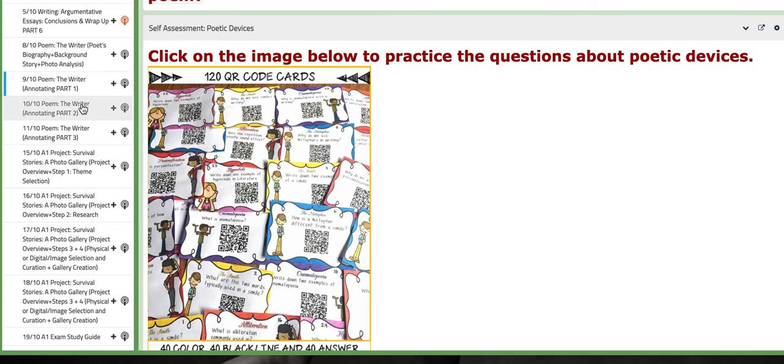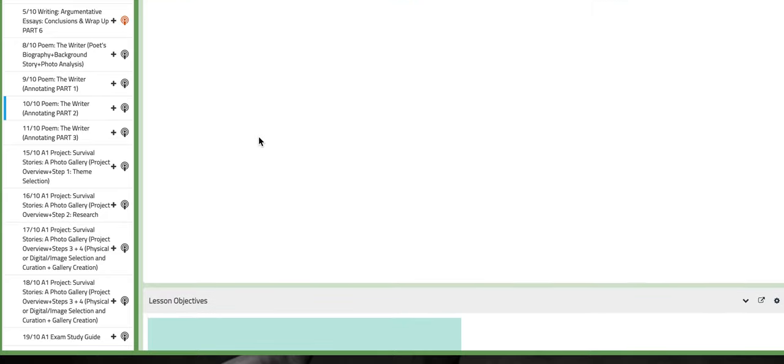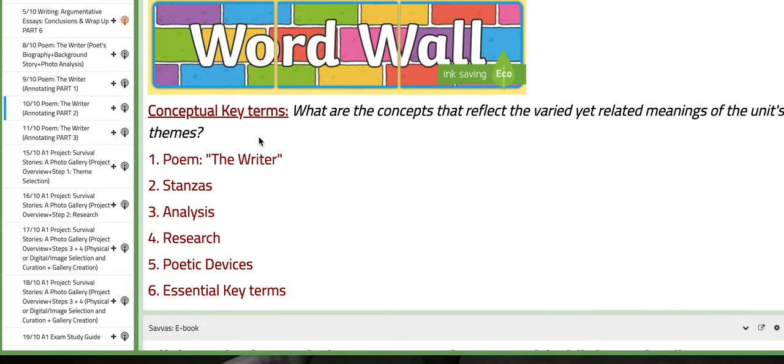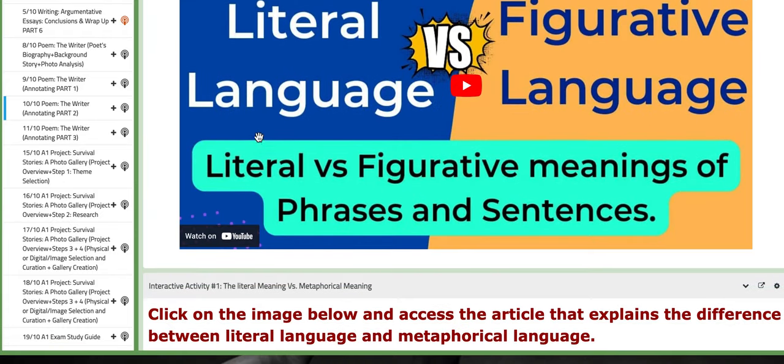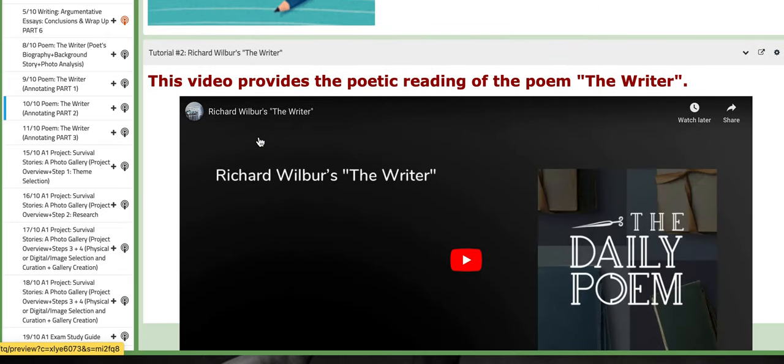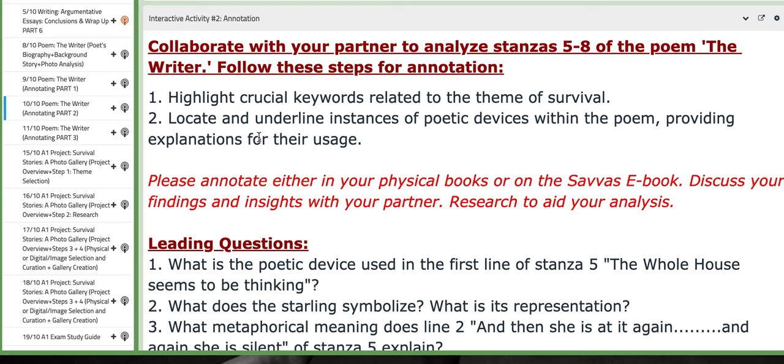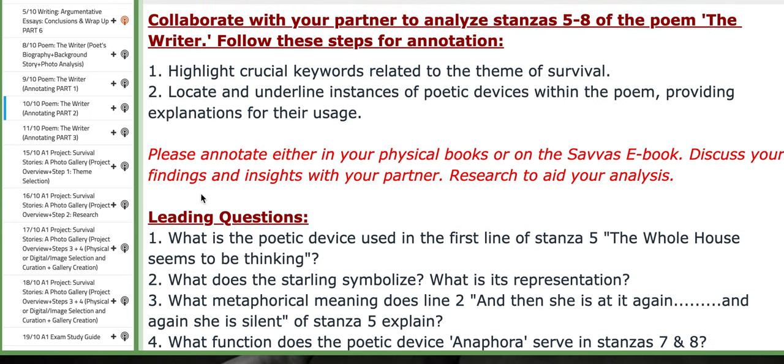Now on the third day of this week, we are going to continue with the annotation. As you can see, I distributed the annotations or the analysis into three parts. The first part, you're going to be working on the first three stanzas. And in this lesson, you are going to work on stanzas from five to eight. We're going to go in chronological order. You also have leading questions that will aid you while you are annotating.